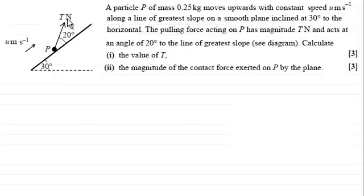The pulling force on P has a magnitude of t newtons and acts at an angle of 20 degrees to the line of greatest slope. And what we've got to do is calculate in the first part the value of t and in the second part the magnitude of the contact force exerted on P by the plane. So if you'd like to have a go at this question and you haven't done so already, just pause the video and when you're done do come back and you can check your solution against mine.